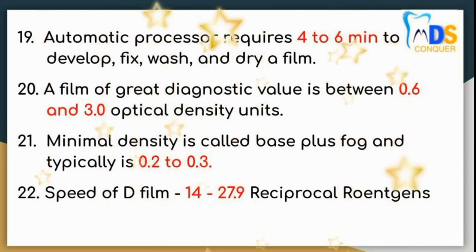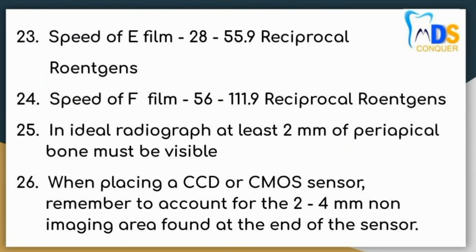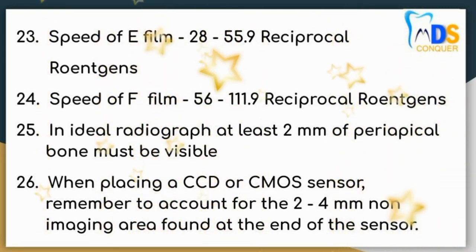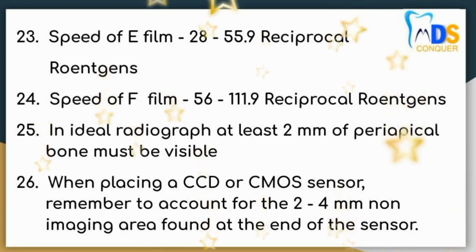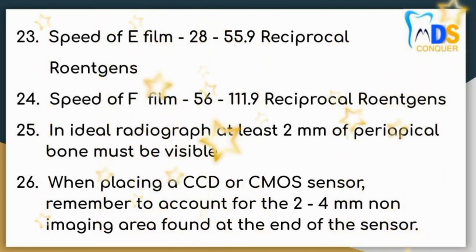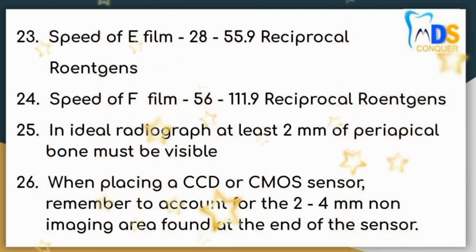Number 22: Speed of D film is 14 to 27.9 reciprocal roentgens. Point number 23: Speed of E film is 28 to 55.9 reciprocal roentgens. Whereas speed of F film is 56 to 111.9 reciprocal roentgens. Number 25: In an ideal radiograph, at least 2 mm of periapical bone must be visible.